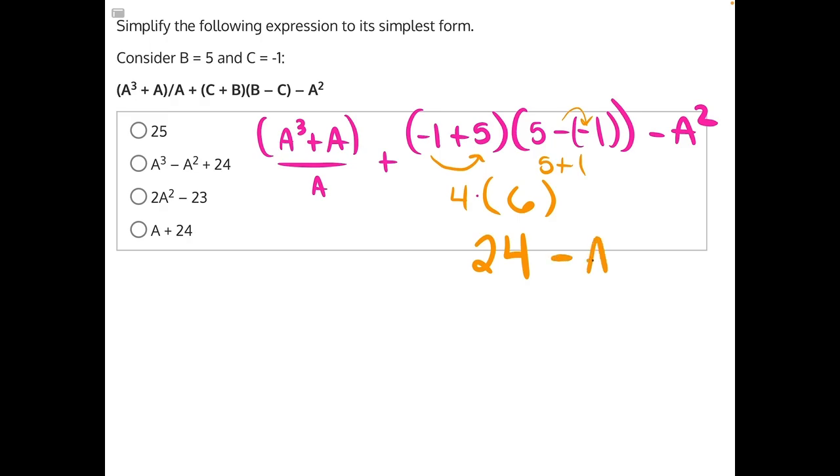Minus a squared plus, and to simplify this fraction over here, it can be helpful to split this into two separate fractions. We have a cubed divided by a plus a divided by a. A divided by a, anything divided by itself would just give us the number 1. And then, this fraction over here, anytime we have two numbers with like bases that have exponents, and we are dividing those two numbers, we will subtract their exponents. This one has a little invisible 1 exponent. So, 3, a to the 3 minus 1, would give us a squared.